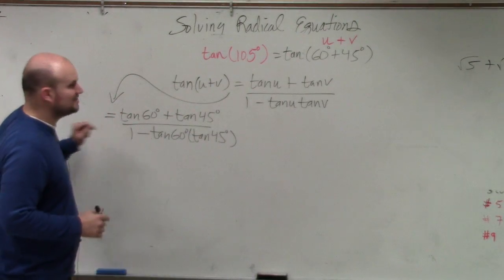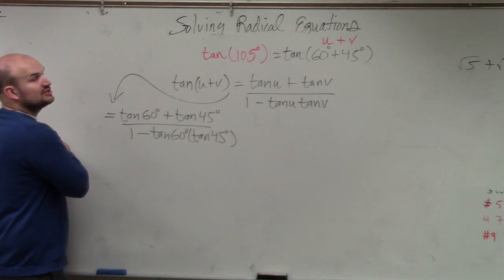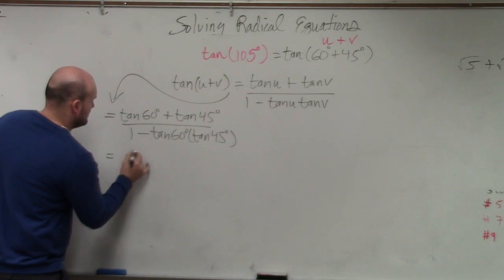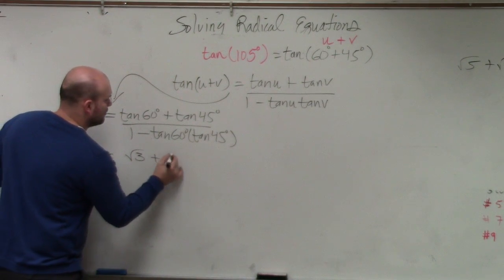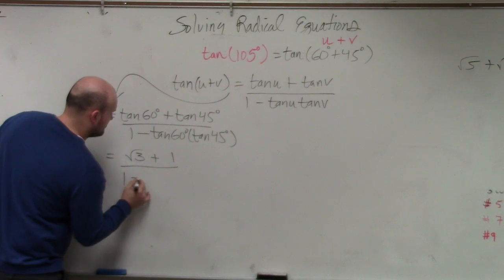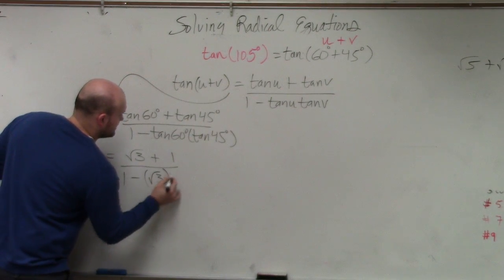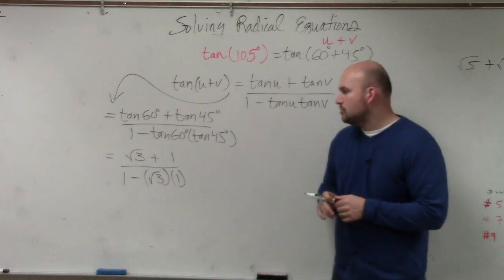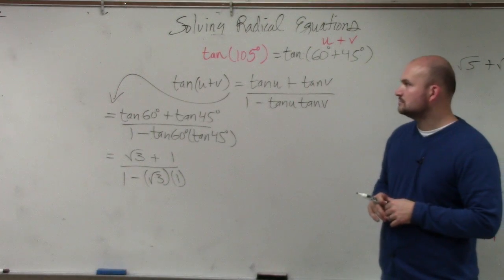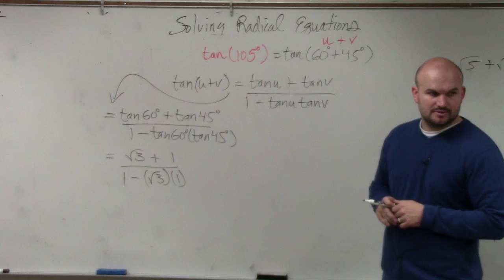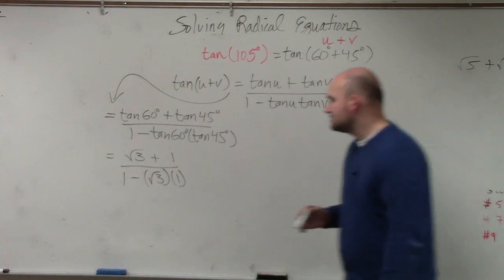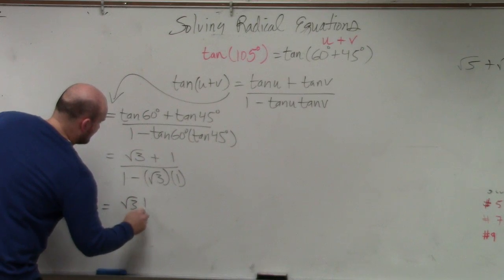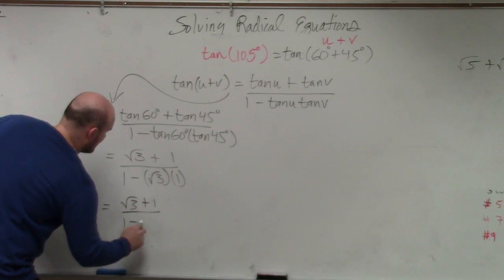All right. So I have tangent of 60 degrees, which is just going to be? What's the square root of 3? Square root of 3. OK. Good. So I have square root of 3 plus 1 over 1 minus square root of 3 times 1. Sweet. Everybody understand? Agree? All right.